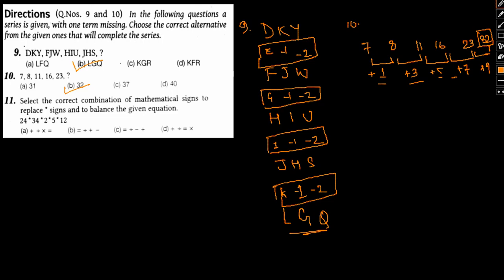Now finally number 11. Select the correct combination of mathematical signs to replace the star sign and balance the equation. We have a certain equation: 24 star 34 star 2 star 5 star 12. Now let's go one by one for each option. Let's first start with option A.